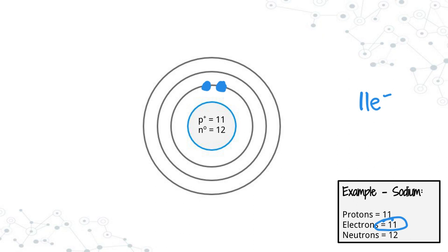We've placed two and still have nine to place, so we start filling the second shell. I'll place electrons one through four, then double them up to five, six, seven, and eight. At this point we have 10 electrons placed and the second energy level is full. We still need to place one more electron, so we put that in our third shell.